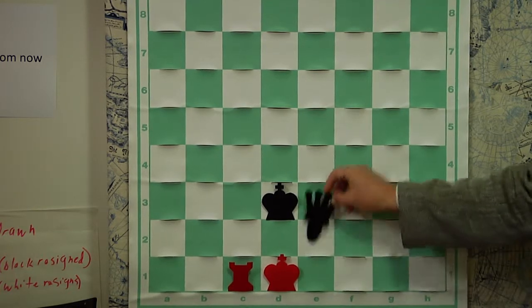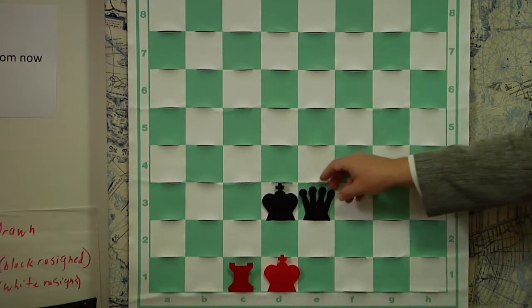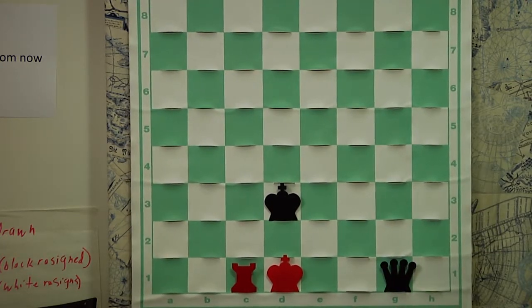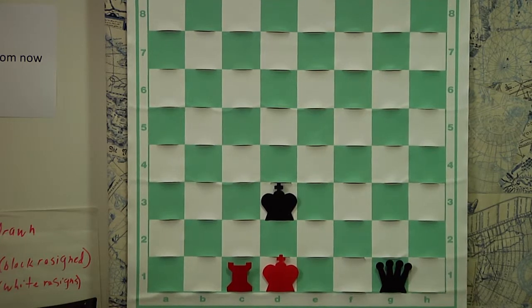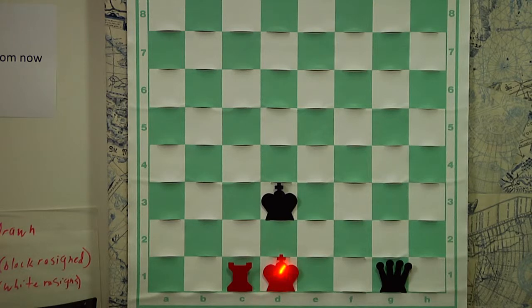Finally, let's look at the third checkmate that black could perform in this position, and it's the long-range checkmate from far away. Now, in this case, we see the queen and the king working beautifully as a team, really complementing each other. Notice how the black king, with its force field of power, stops the red king from moving to any of these squares because kings cannot move next to each other.